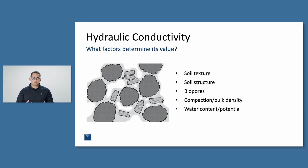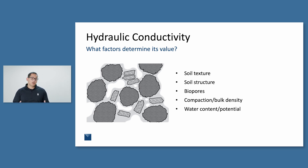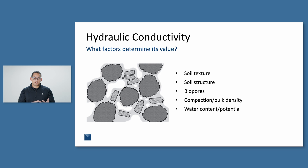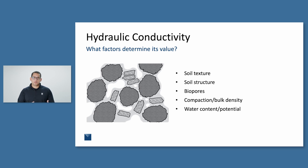To dive a little deeper, we need to understand the factors that actually determine the value of hydraulic conductivity. We have soil texture, soil structure — which is one of the critical pieces that plays one of the biggest roles in hydraulic conductivity and how well soil can infiltrate water. Biopores, things like wormholes and decaying root channels, also play a really big role. Compaction and bulk density play a big role as well. And the initial water content or water potential of the soil also plays a big role, especially in expansive soils.